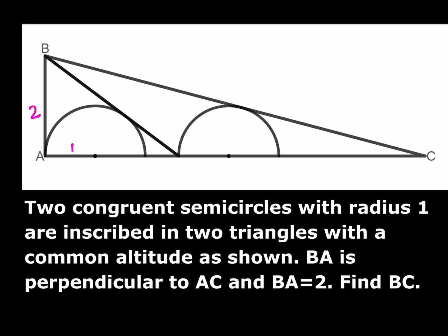I'm going to start by marking these lengths here — that's 1, and that's 1. I'm not going to mark the other one because we're going to use it for something else. Let's make a connection here. I'm going to drop a perpendicular that way, and then another perpendicular this way. These are perpendicular lines because the tangent line is always perpendicular to the radius at that point. This is also 1, and this is also 1.